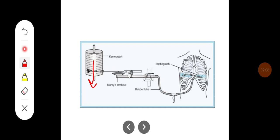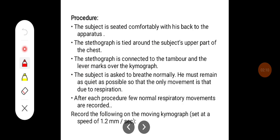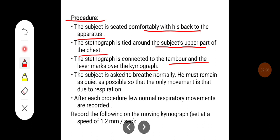The procedure to record the movements of the chest: the subject is seated comfortably with his back to the apparatus. The stethograph is tied around the subject's upper part of the chest. The stethograph is connected to the tambour and the lever marks over the kymograph. The subject is asked to breathe normally and must remain as quiet as possible so that only movement due to respiration is recorded.